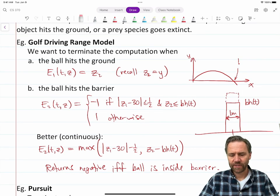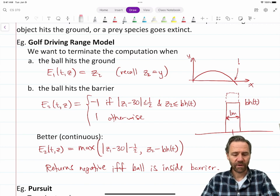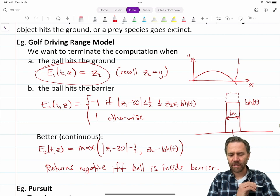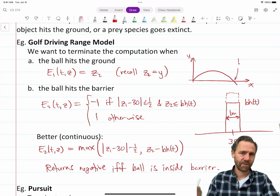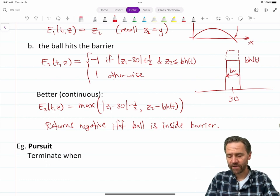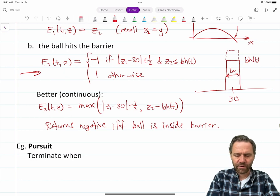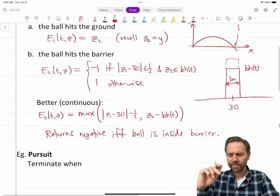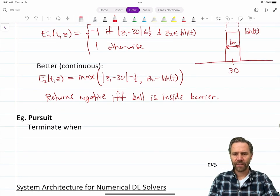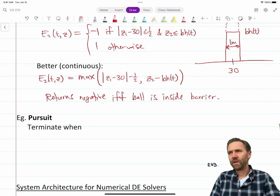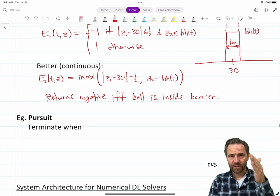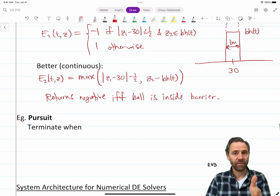Just reviewing what we were doing last time, we have the novelty driving range golf model. We define these event functions. This one here basically goes from positive to negative when the ball hits the ground, assuming the ground is at y equals 0. I defined a couple other versions of the same event of hitting the barrier. This first one is not so good because it's discontinuous. It goes from positive 1 to negative 1 in discontinuity.